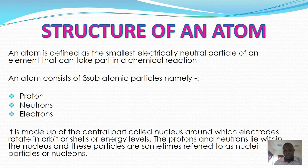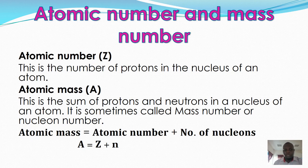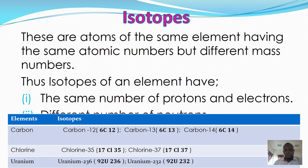Now we have some difference between the atomic number and mass number. Atomic number is the number of protons in the nucleus of an atom, represented with the symbol Z. Atomic mass is the sum of protons and neutrons in the nucleus of an atom. We can obtain the atomic mass by adding the atomic number plus the number of neutrons.